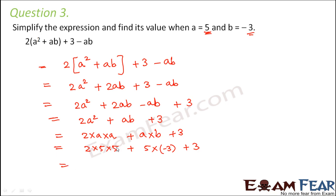So 2 times 5 is 10, 10 times 5 is 50. 5 times 3 is 15. So this is minus 15 plus 3. So 50 plus 3 would be 53 minus 15. So 53 minus 15 would be 38. So 38 would be the value of this expression.